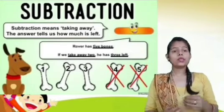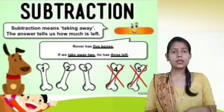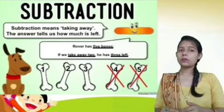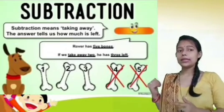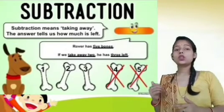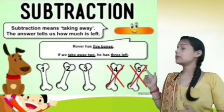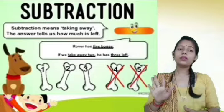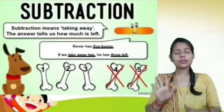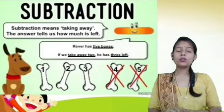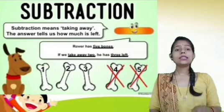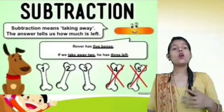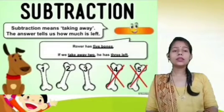As you can see in the picture on my backside, there is a dog whose name is Rover. Rover has five bones with him. Now he has eaten two bones. So how much is left with him? Five bones, two are eaten — how much is left?